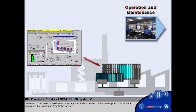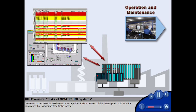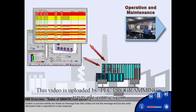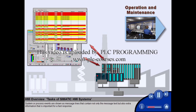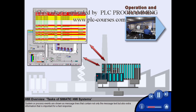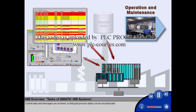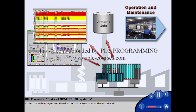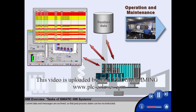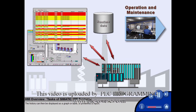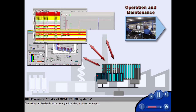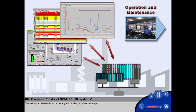System or process events are shown as message lines that contain not only the message text, but also extra information that is important for a fast response. Current data and messages are archived so that past process states can be reconstructed. The history can then be displayed as a graph or table or printed as a report.